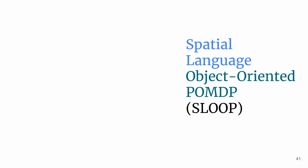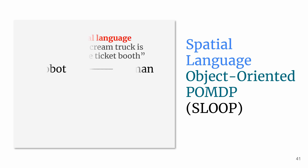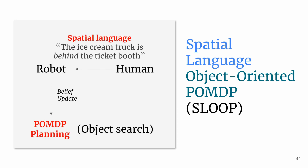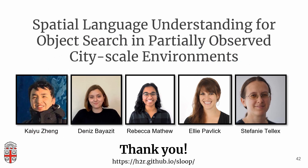To sum up, we proposed Spatial Language Object-Oriented POMDP, a framework that integrates natural spatial language provided by a human into the POMDP decision-making process, and applied this framework to object search in city-scale environments. Finally, I'd like to thank my collaborators, and thank you for your attention.